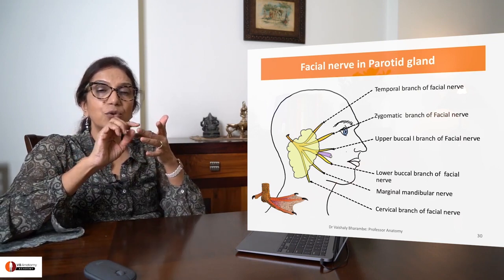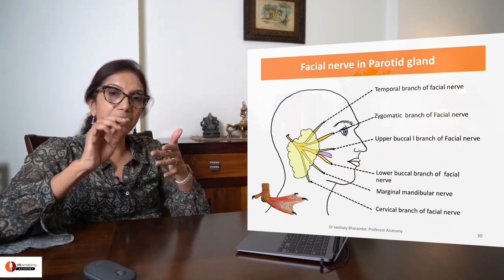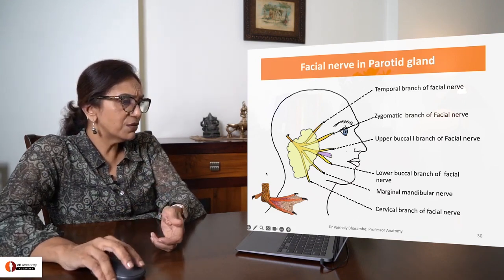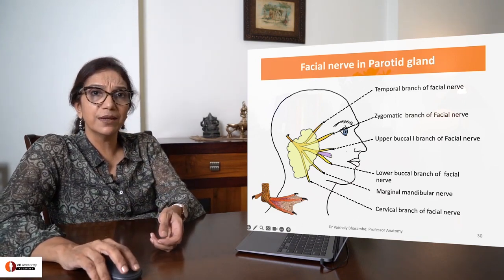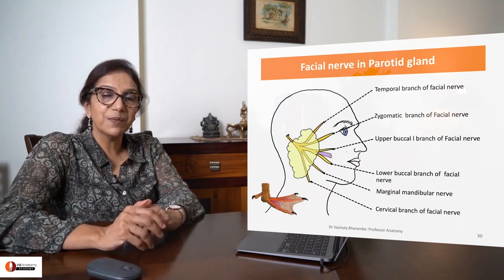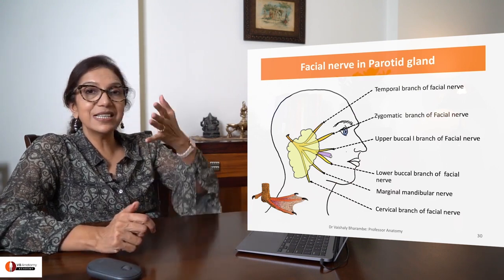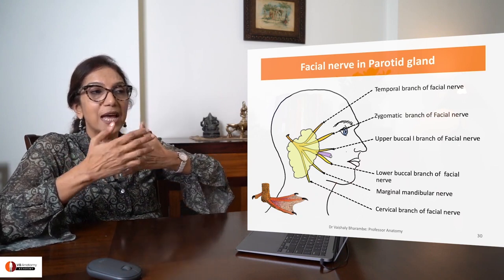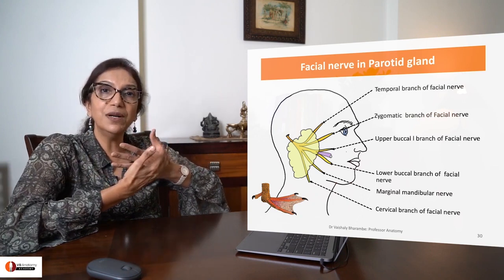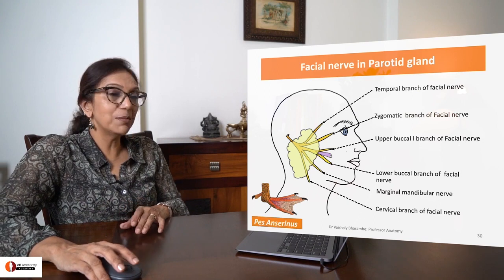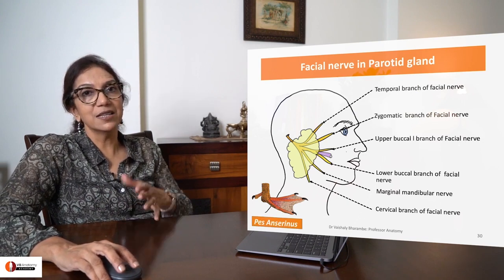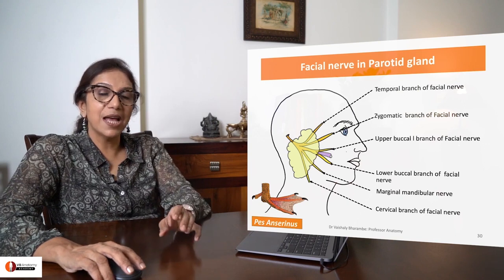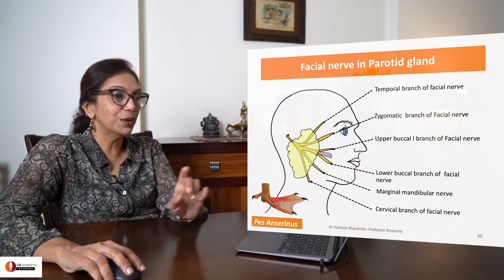Remember, the buccal divides into an upper and lower buccal branch. Why is there a goose's foot here? This division of facial nerve has been compared to the foot of a goose, and hence the name Pes Anserinus. This image is called Pes Anserinus — that is why 'the foot of the goose.'